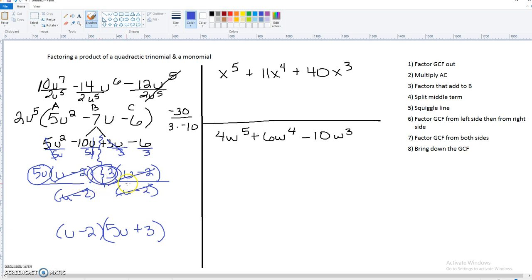Okay, now the last step, I said bring down the GCF. You're like, what? Well, remember, we originally took a 2u to the 5th out. See way up here? So we need to make sure to bring it down. So don't forget. You will kind of growl at yourself if you do. So this whole thing right here will be the answer for that particular example.